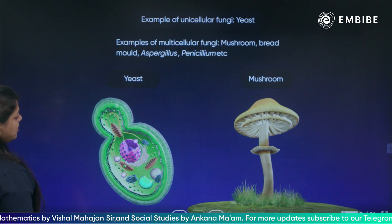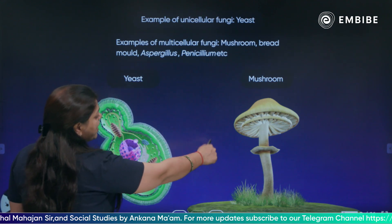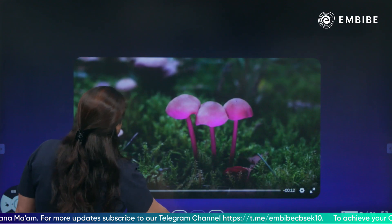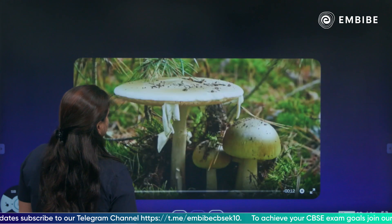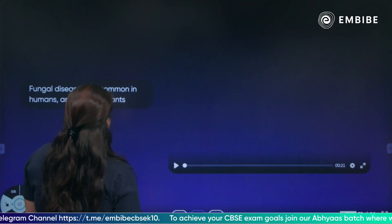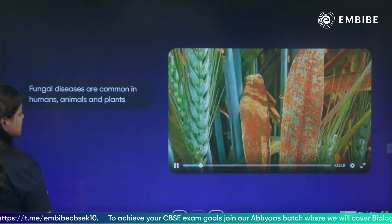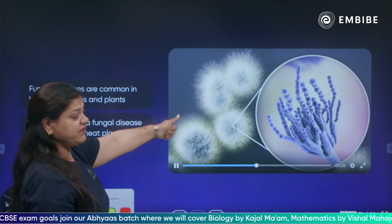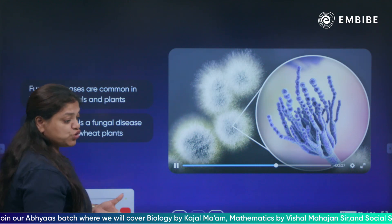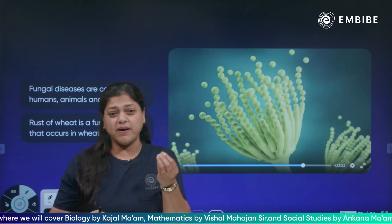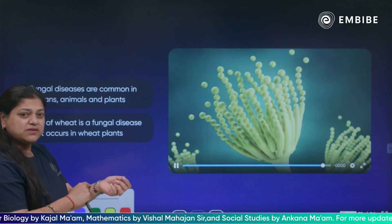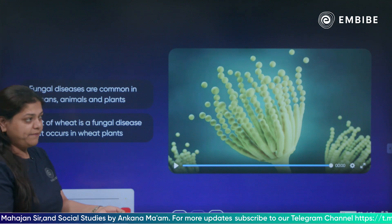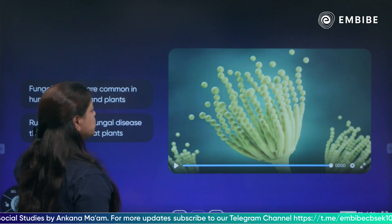An example of unicellular fungi is yeast; mushroom is multicellular. These are different kinds of mushrooms. Some fungal diseases include black and red rust in wheat caused by Puccinia. In animals, ring-like structures on the skin are also caused by fungi. Many skin diseases are caused by fungi.